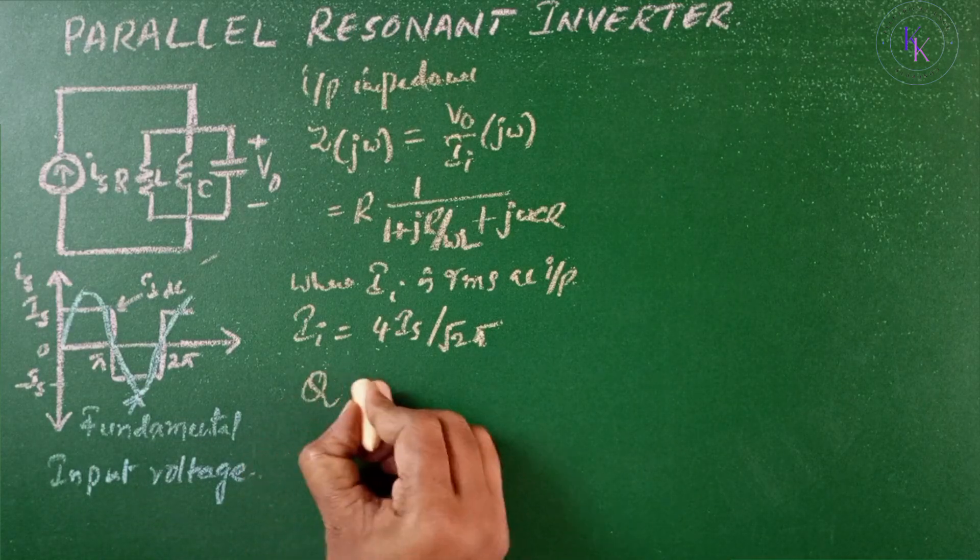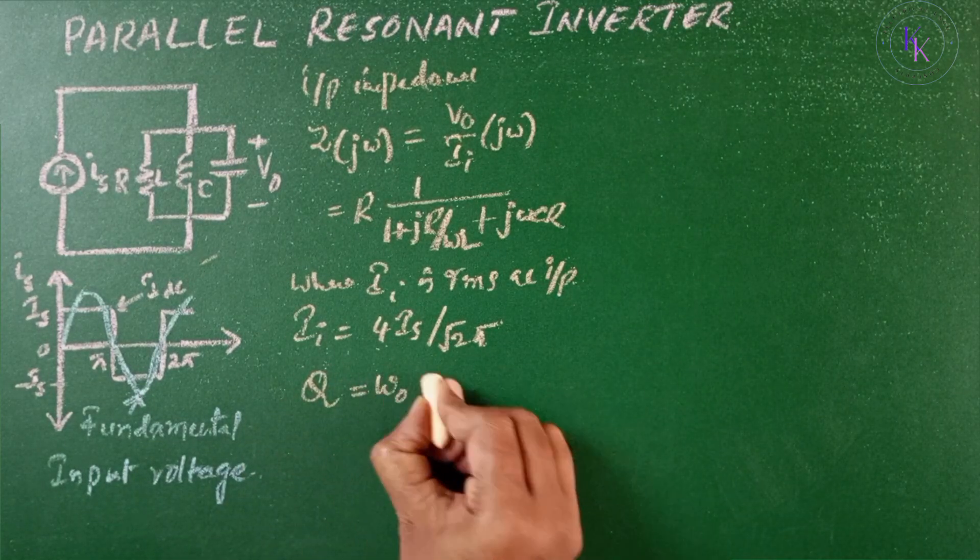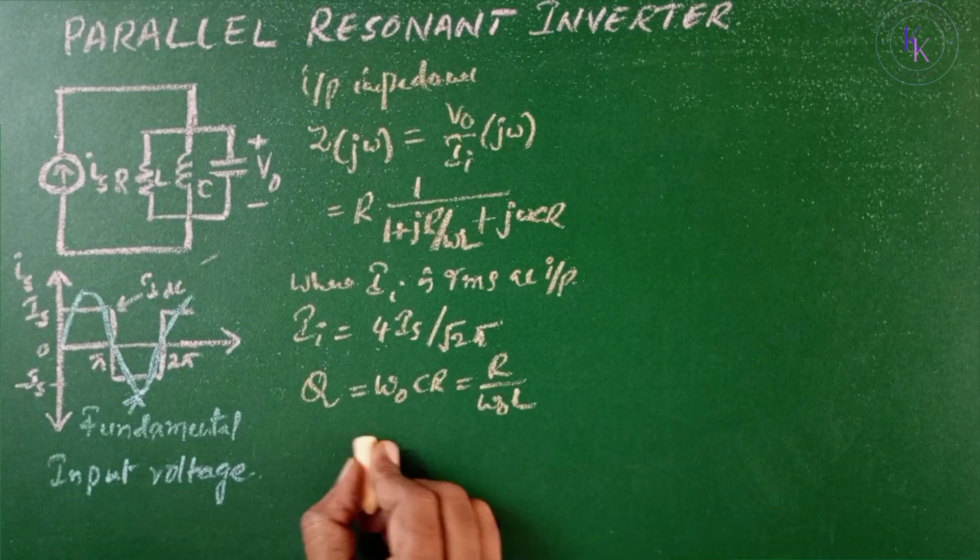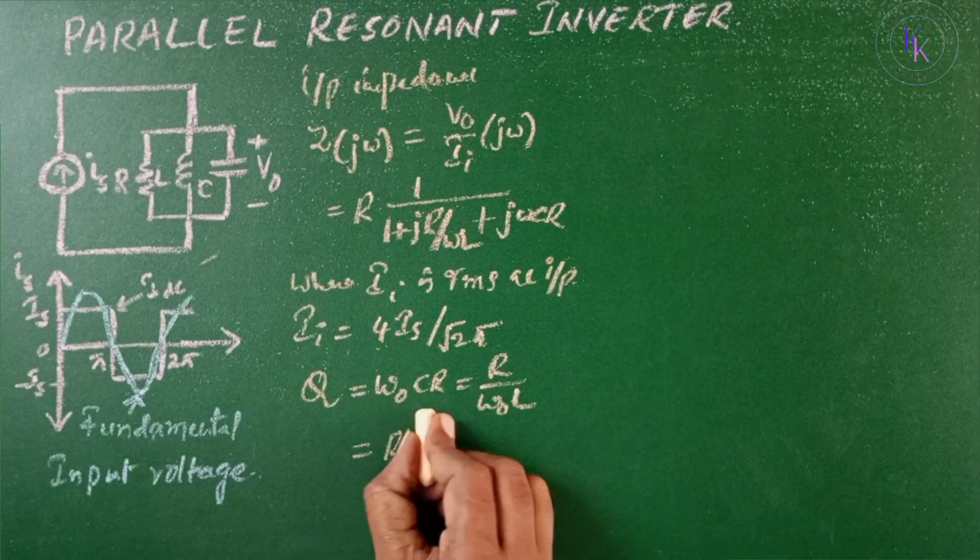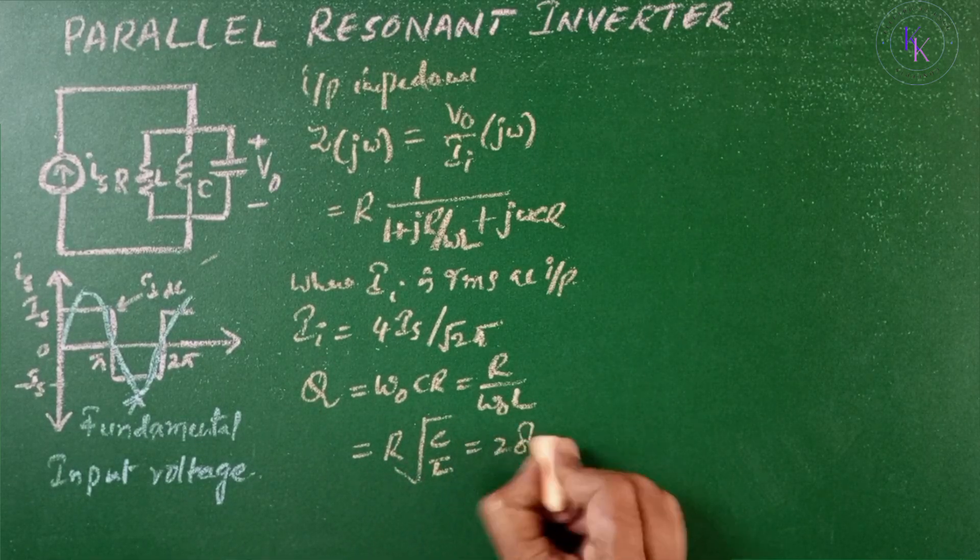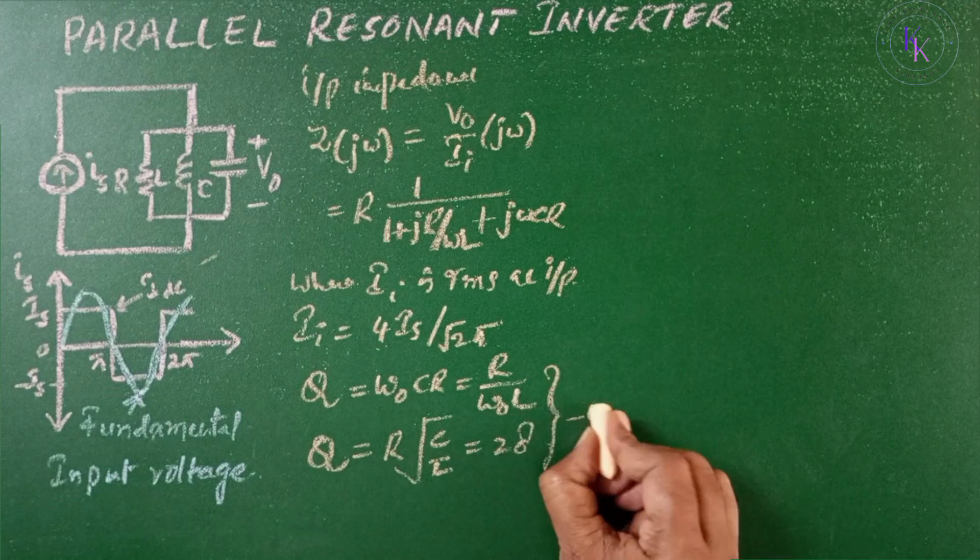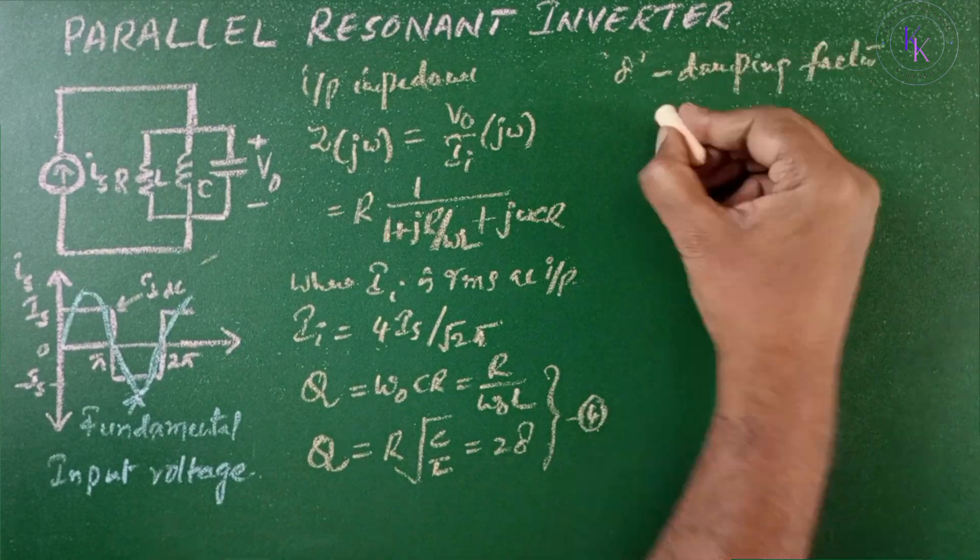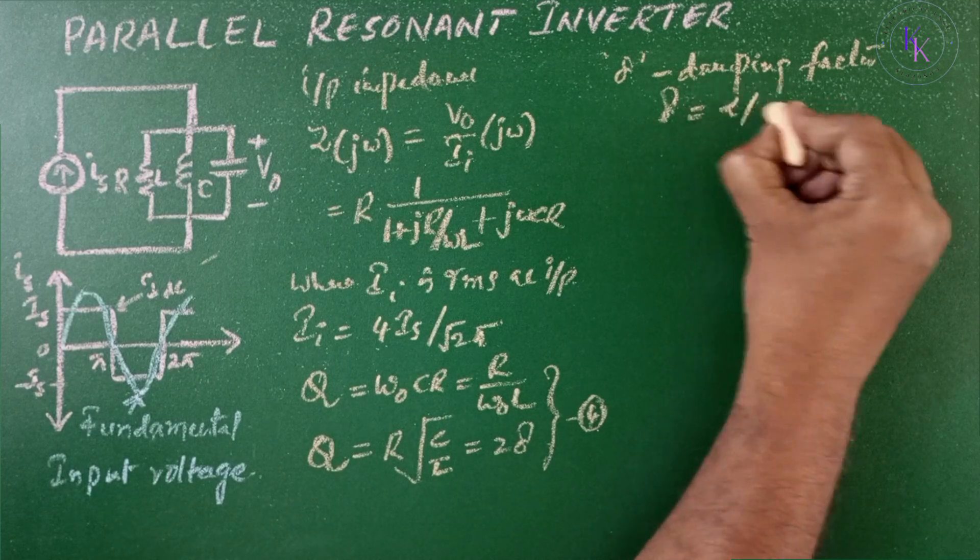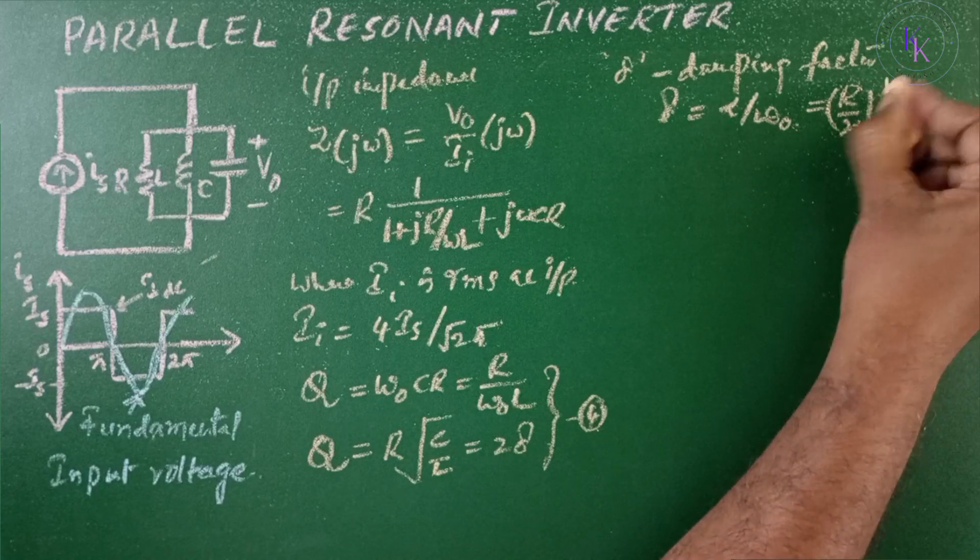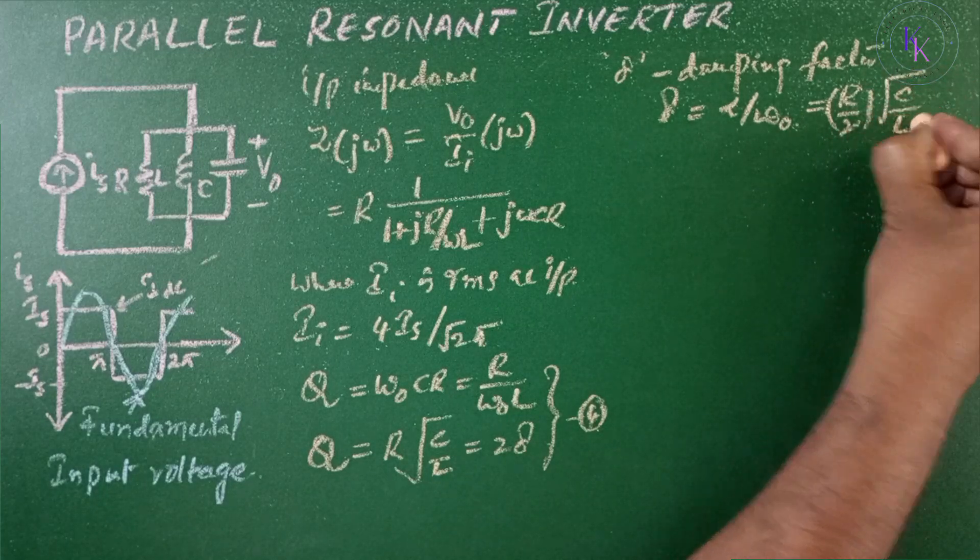The quality factor Q is given by ω₀CR = R/(ω₀L) = R√(C/L) = 2δ, equation 4, where δ is the damping factor and δ = α/ω₀ = R/(2√(C/L)).